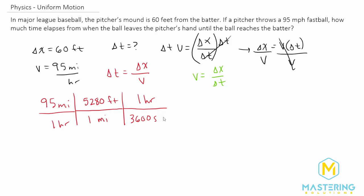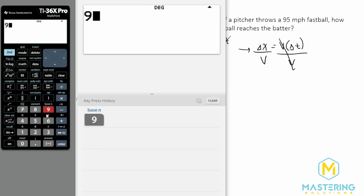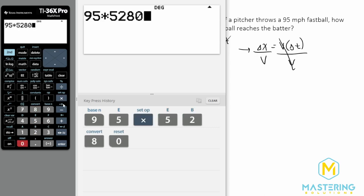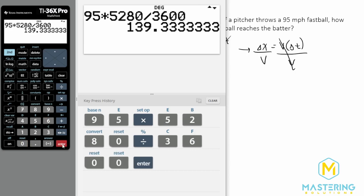So now we can plug this into our calculator with 95 multiplied by 5,280, and then we'll divide that by 3,600. So we have a speed of 139.33 feet per second.